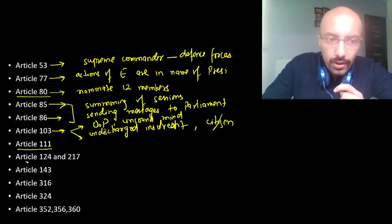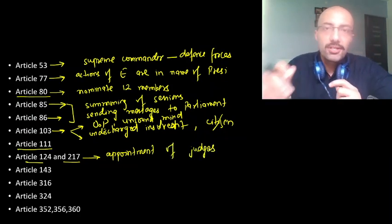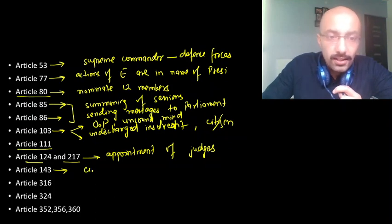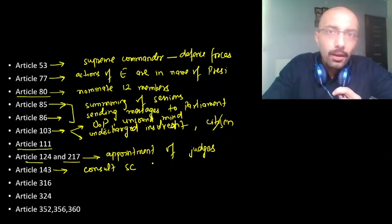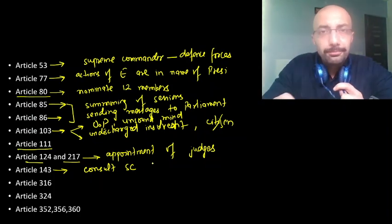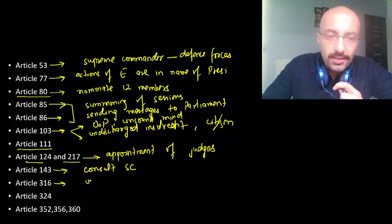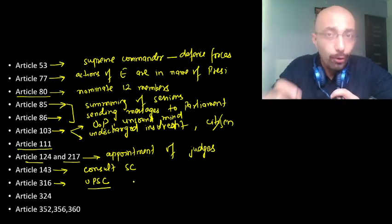Articles 124 and 217 talk about the appointment of Supreme Court and High Court judges. Article 143 empowers the President to consult the Supreme Court on any matter of law of public importance — raising the question of whether he does so on the advice of the PM and Council of Ministers or in his individual judgment. Article 316 talks about the appointment of the UPSC Chairperson and members — again, is this a discretionary power or done on ministerial advice?